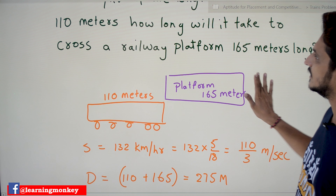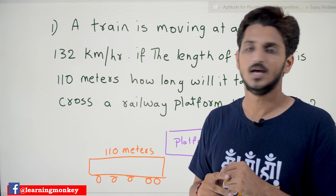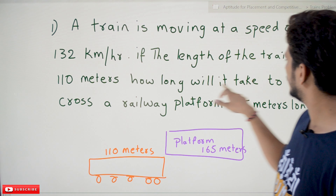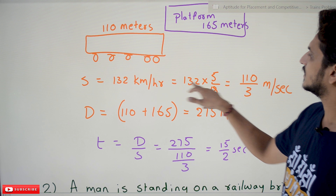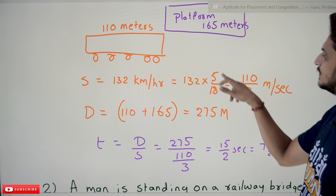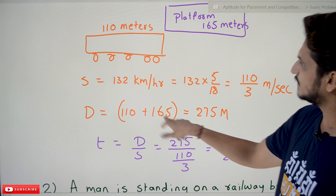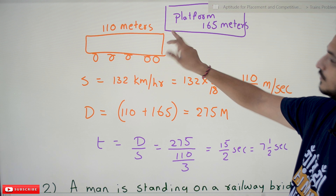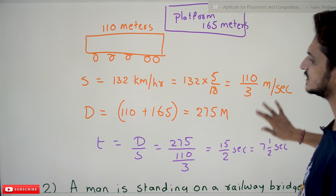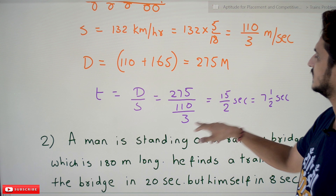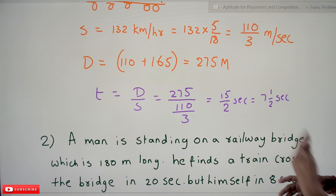Speed is given as 132 kilometers per hour. We have to convert that into meters per second. Speed is given, distance is given, we have to find the time. Time is equal to distance by speed. Speed equals 132 km/h, converted: multiply by 5/18, that gives 110/3 meters per second. Distance is 110 plus 165, which equals 275 meters. Time equals distance by speed: 275 divided by 110/3, which equals 15/2 — that is 7.5 seconds.